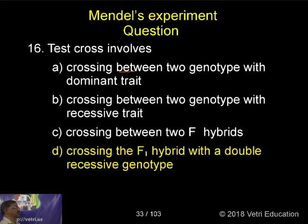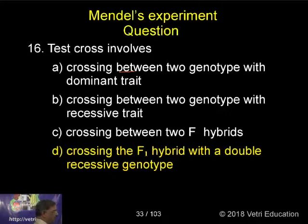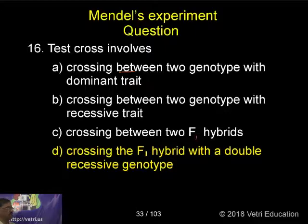A test cross involves: crossing between two genotypes with dominant traits; crossing between two genotypes with recessive traits; crossing between two F1 hybrids; or crossing the F1 hybrid with a double recessive genotype.